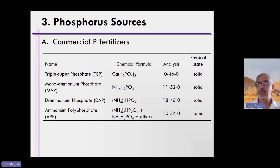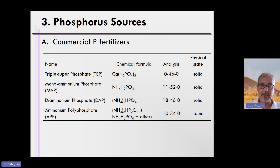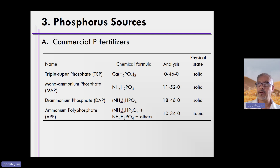Triple super phosphate is calcium with two orthophosphate ions. The analysis of this is 0-46-0, and it is a solid. That value is based on the molecular weight of how much phosphorus is present in Ca(H2PO4)2 — you take the molecular weight of phosphorus, divide by the molecular weight of the entire chemical, and multiply by 100, which equals 46.